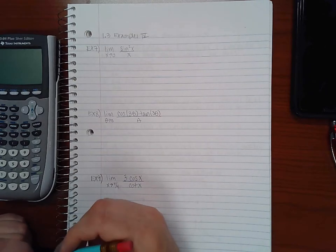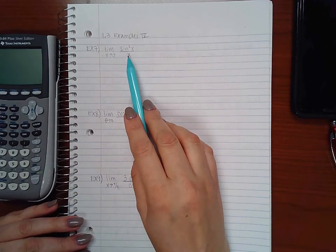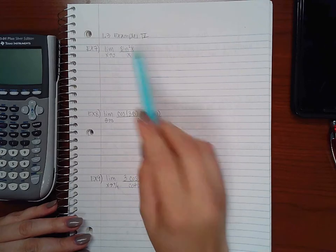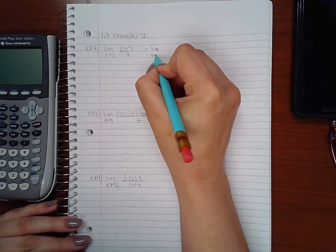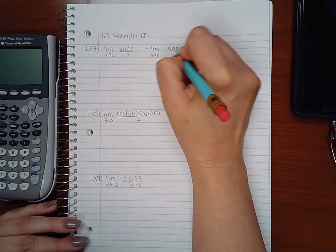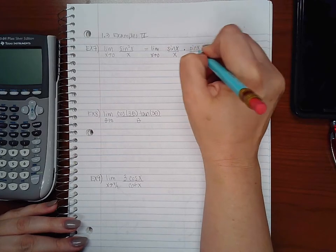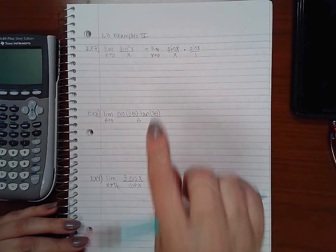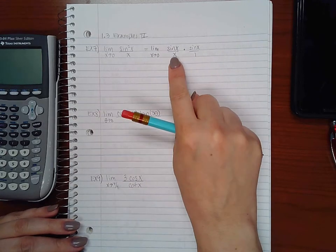For this case I do want to apply one of those special theorems, but I notice I have sine squared. What I can do is I can separate this into its factors and say sine of x over x times sine of x over 1. So sine x sine x is sine x squared and x times 1 is just x.